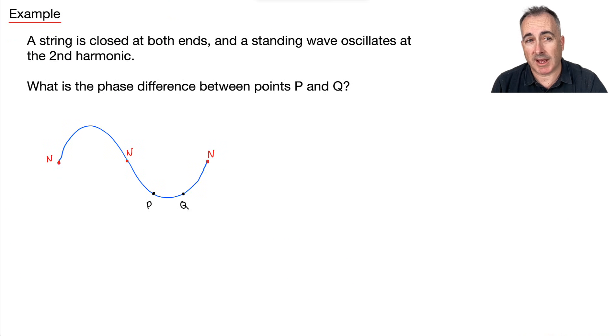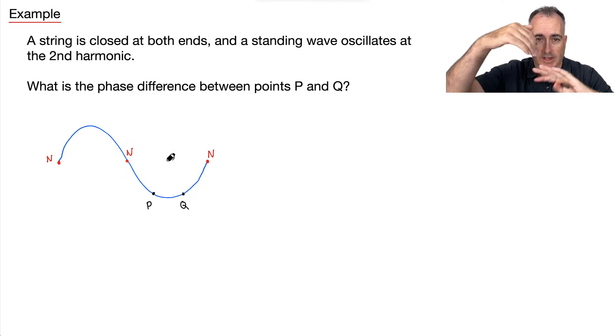We have an example now where we're looking at a string that's closed at both ends and a standing wave oscillates at the second harmonic. This is the second harmonic. We'll just imagine it's vibrating up and down here. And this is going down and up. If you look at my hands, it's going like that.